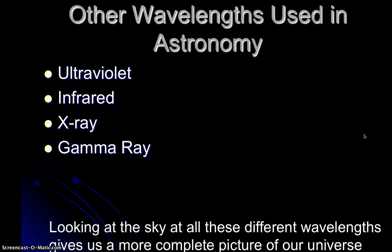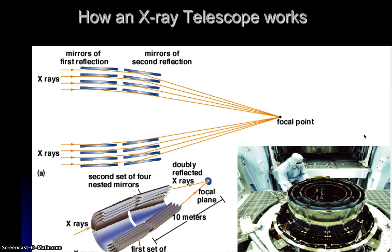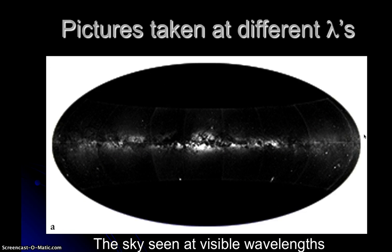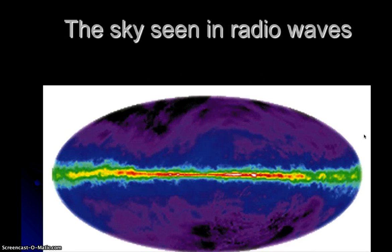Other types of wavelengths that astronomers look at include ultraviolet, infrared, X-rays, and gamma rays. Studying all of these allows astronomers to get a more complete picture of what's going on in our universe. This is a picture of an X-ray telescope — the mirror setup is quite different for reflecting X-rays. Finally, we'll look at different pictures of the entire sky in different wavelengths to give you a sense of how studying all wavelengths gives us different information and a more complete picture of our universe.